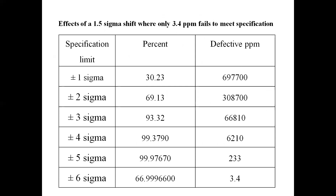Continuing the sigma level table: plus or minus 3 sigma is accepted with some rejection; plus or minus 4 sigma gives 99.9937% accepted; plus or minus 5 sigma gives 99.99767% accepted; plus or minus 6 sigma gives 99.99966% accepted — that is 3.4 parts per million (10 million components). This is the standard for the Six Sigma process.